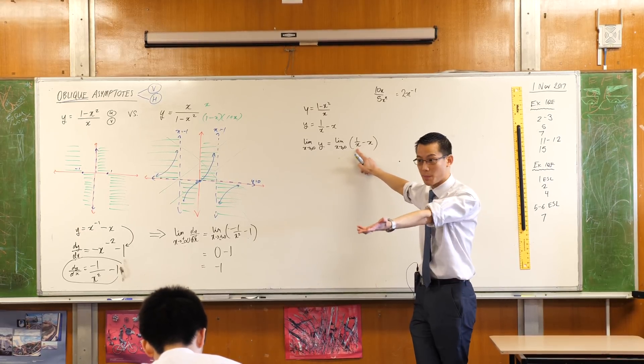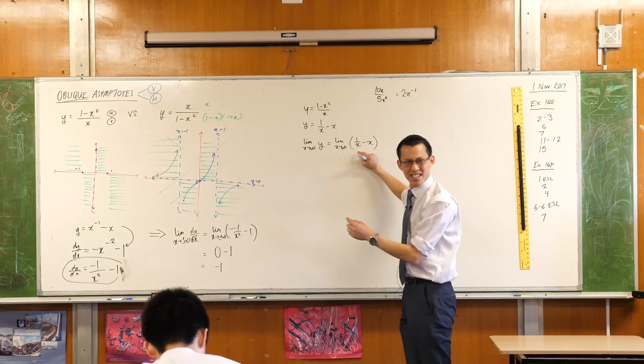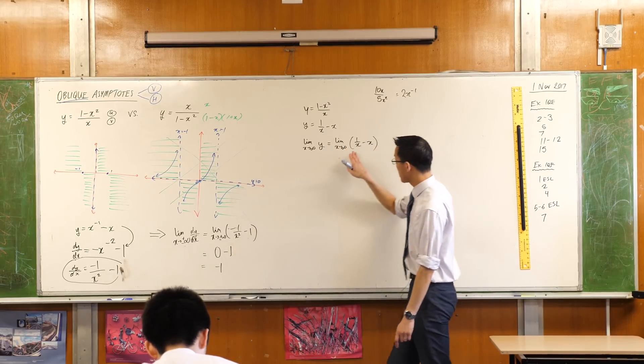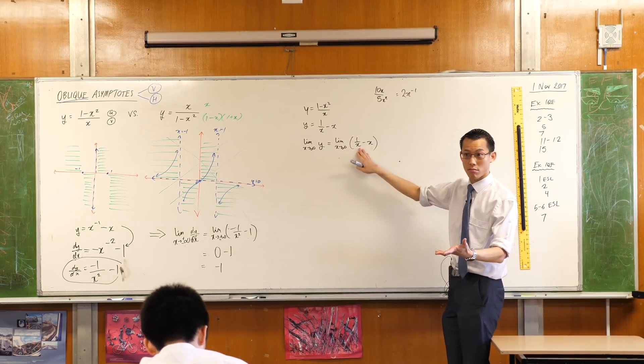This guy, the denominator gets bigger, it does exactly the same thing as that. It doesn't do it quite as fast, because this is squared. But this also goes to zero, does it not? Also goes to zero.